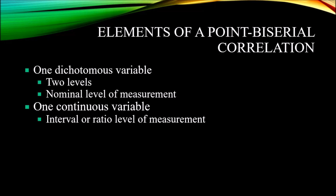For a point-biserial correlation, you also need one continuous variable recorded at the interval or ratio level of measurement. Together, interval or ratio is referred to as continuous, though there is a difference. Both have a meaningful distance between observations, but only the ratio level has a true zero. For example, the Fahrenheit scale is interval — its zero does not represent an absence of heat. The Kelvin scale is ratio — its zero does represent an absence of heat.